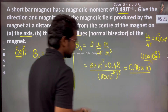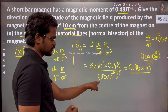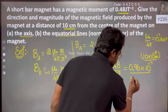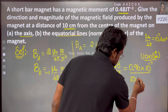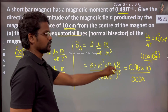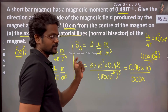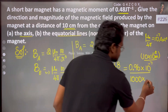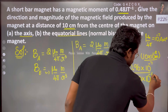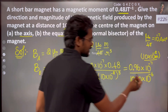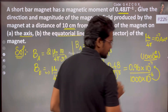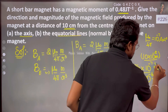Divided by 10 cubed: 10 × 10 × 10 = 1000, which is 10 to the power 3, and from 10⁻² cubed we get 10⁻⁶. So in the denominator we have 10⁻⁶, which gives plus 6 in the numerator, and combined with minus 7 from μ₀/4π.